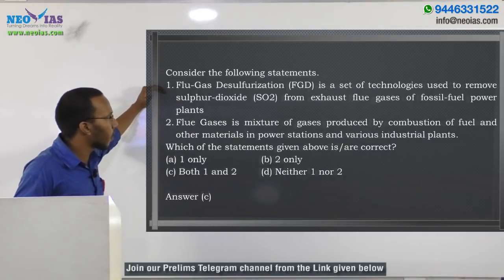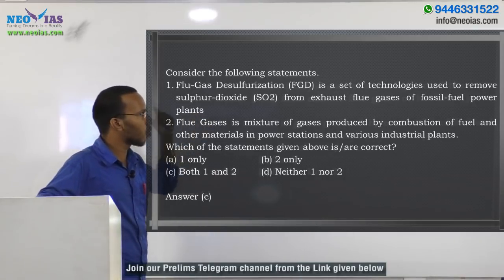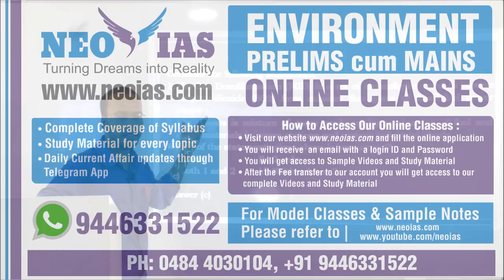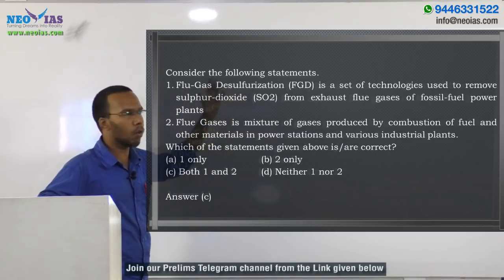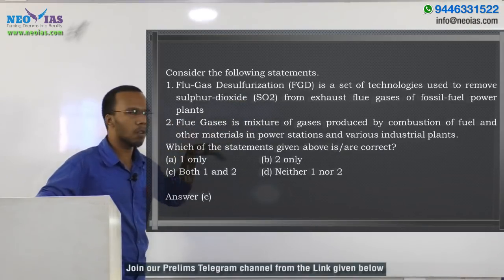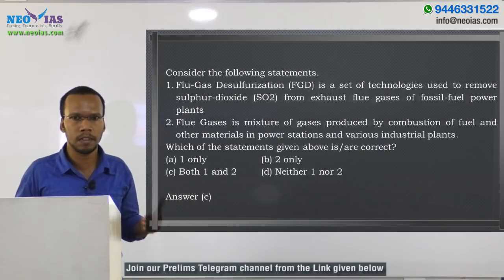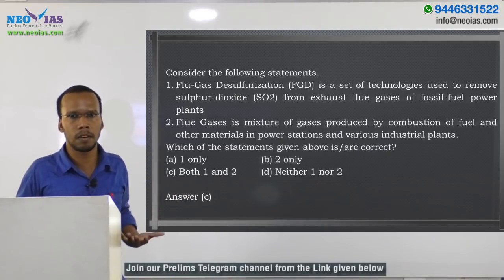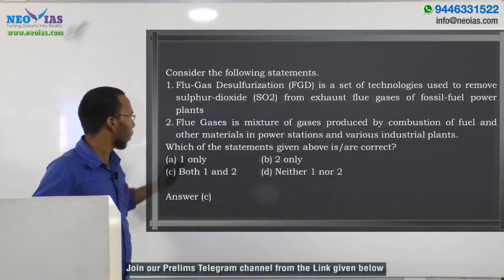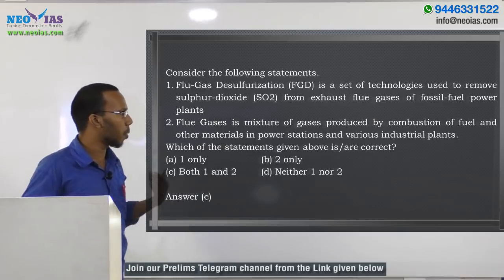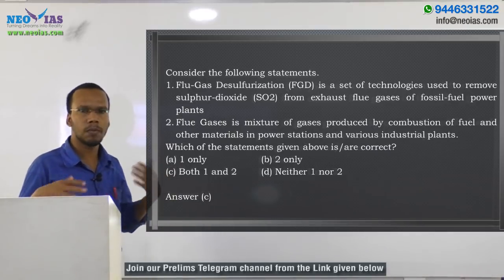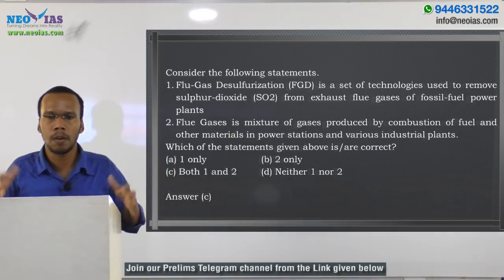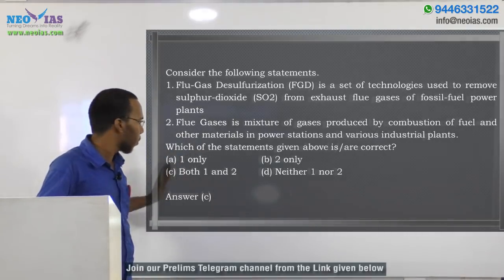Now reviewing the question: Statement 1 — flue gas desulfurization is a set of technologies used to remove sulfur dioxide from exhaust flue gases of fossil fuel power plants — is correct. It is not only used in fossil fuel power plants but also in other industries using fossil fuels as their power source. Statement 2 — flue gases are a mixture of gases produced by combustion of fuel and other materials in power stations and various industrial plants — is also correct. Therefore, the answer is both one and two.